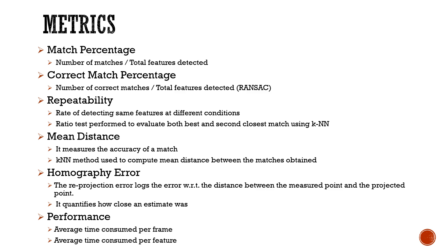This was computed using RANSAC, which ignores all the outliers and finds the best match. The third metric is repeatability, which is the rate of detecting the same features at different conditions. To compute repeatability, we performed a ratio test and evaluated both the best and the second closest match using the KNN algorithm for K equal to 2.